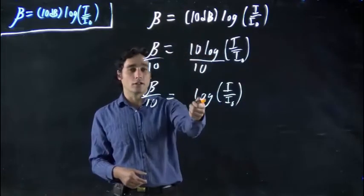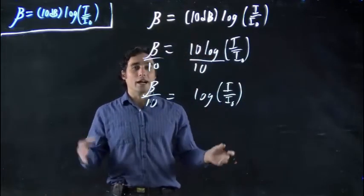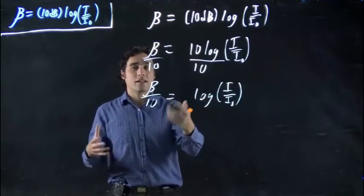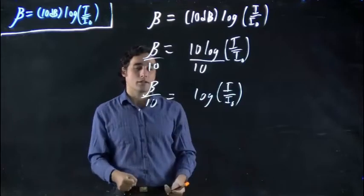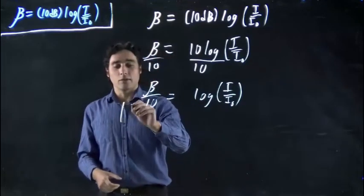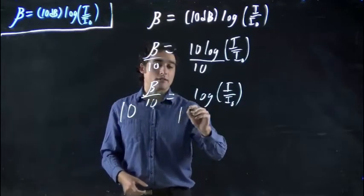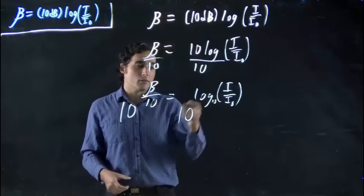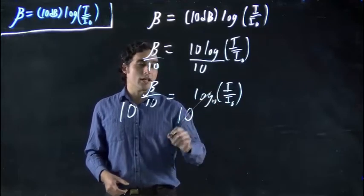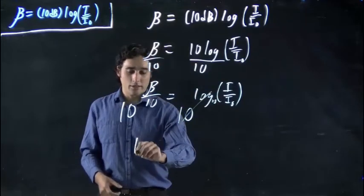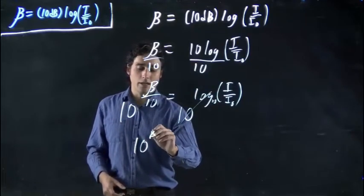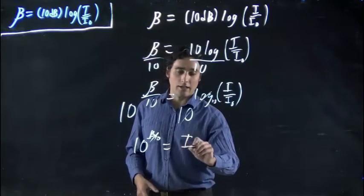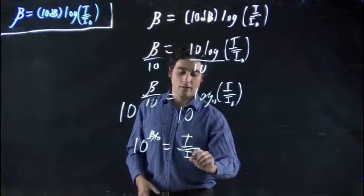As always, if I want to get rid of a logarithm, I put both sides to whatever the base is, and I put everything to the exponent. So in other words, I'm putting 10 on both sides. Again, this you can think is log to base 10. We normally don't bother writing it, but we could if we wanted, and these will cancel. And we're left with 10 to the beta over 10 on the one side, all equals I over I₀.